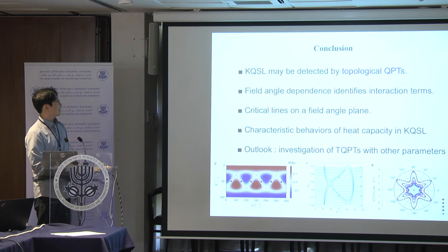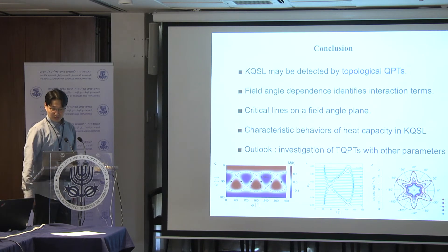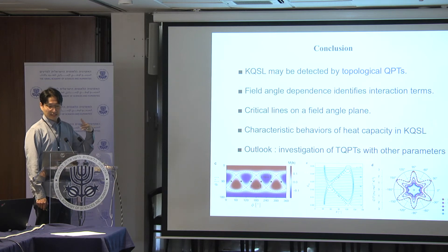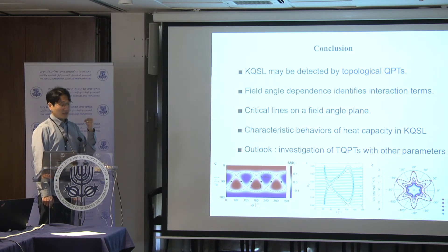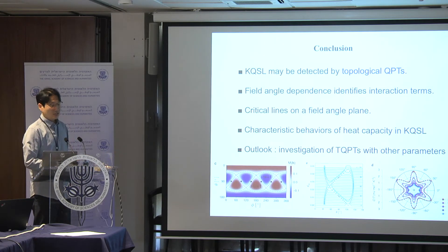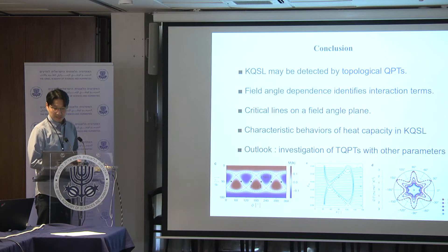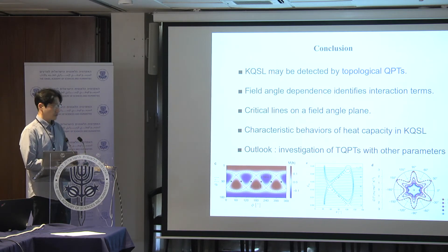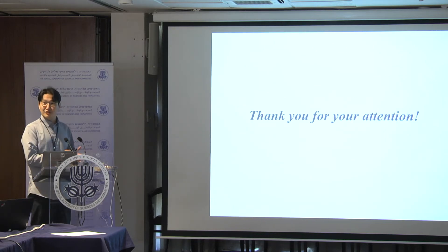Here is my conclusion. The Kitaev spin liquid ground state is one of the most entangled states. But identification of such states is very difficult because they are highly entangled. Since it has very special properties, we can use these topological properties further. We propose that field-angle dependence may identify the existence of Kitaev spin liquid. Thank you very much for your attention.